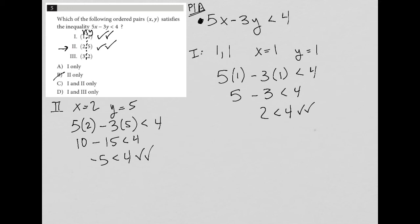So 2 is also good, which automatically means A is gone because that says Roman numeral answer 1 only. And D is gone because it says 1 and 3. Which means that C must be the correct answer.